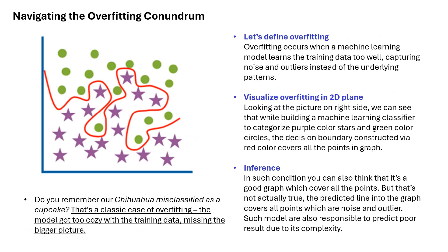Let's define overfitting. Overfitting occurs when a machine learning model learns the training data too well, capturing noise and outliers instead of the underlying patterns. Let's visualize overfitting in a 2D plane. Looking at the picture on the right side, we can see that while building a machine learning classifier that categorizes purple color stars and green color circles, the decision boundary constructed via the red color covers all the points in the graph. The predicted line covers all points which are noise and outliers. Such models are also responsible for predicting poor results due to their complexity.